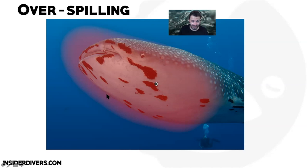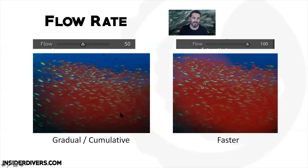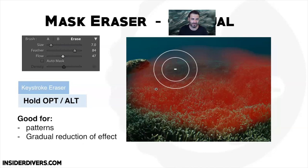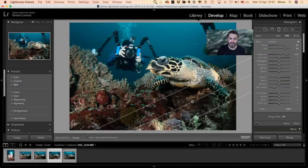We don't want spillage — if brightness is attached and it spills over you can see it very easily, so we need to reduce that. You also need to decide on your flow rate: 50 is gradual and cumulative, but if you need to go quick just flick it to 100 and brush so you know if what you're planning is possible. Then you erase by holding Option and gradually remove the brightness. You can do it while having the mask activated or while having the effect activated.